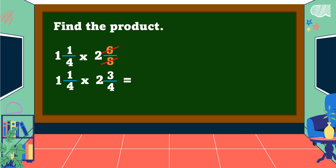Now change the mixed fractions into improper fractions. For 1 and 1/4: 1 times 4 is 4, plus 1 is 5; copy the denominator 4. For 2 and 3/4: 2 times 4 is 8, plus 3 is 11; copy the denominator 4. Next, multiply both numerators and both denominators: 5 times 11 is 55, and 4 times 4 is 16.